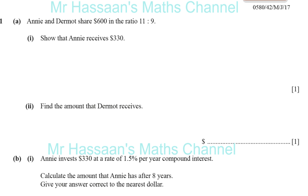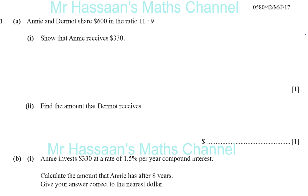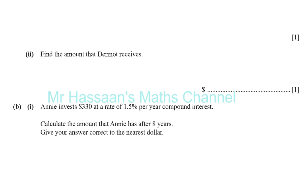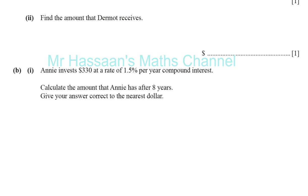Here's a question from May-June 2017, Paper 4, Variant 2. I'm doing this question because I feel there will be something of this nature in Paper 4 of June 2018, as there were no questions on percentages, ratios, or compound or simple interest. So I decided that I will do this question.